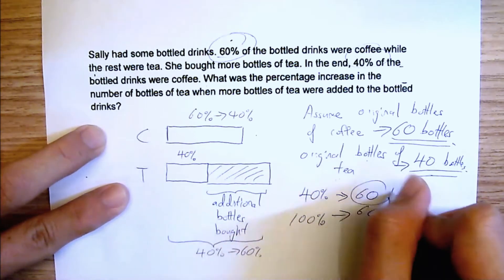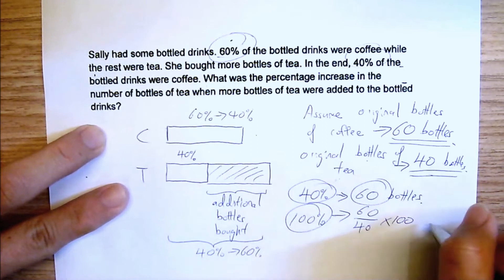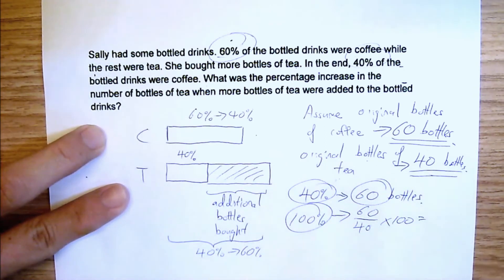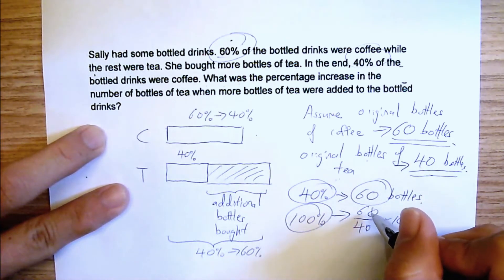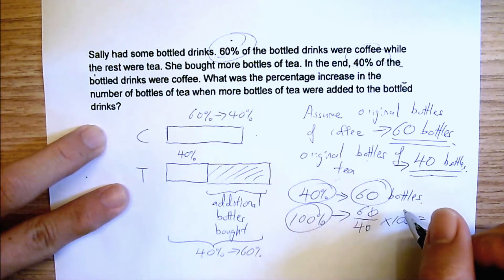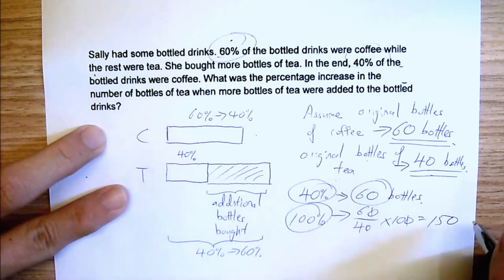So it would be 60, same thing as 60 divided by 40 times 100. And throw this into the calculator, this should probably be 150. Cancel, cancel, cancel. This one would be 3 over 2, 3 over 2 times 100, 150, correct? 150 bottles. You can just put into the calculator, you'll be the same.